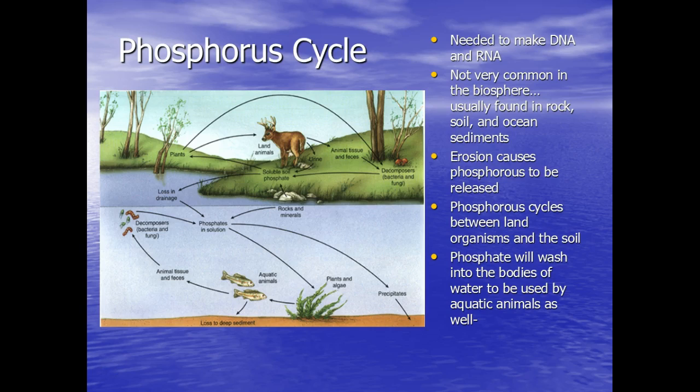The phosphorus cycle is a little different than the nitrogen and carbon cycles because it's not really found in the atmosphere. Phosphorus is needed to make DNA and RNA. It's not very common in the biosphere. It's usually found in rock, soil, and ocean sediments.